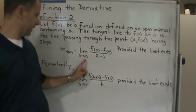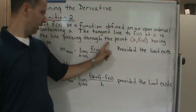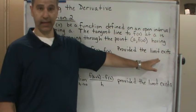Notice the slope of the tangent line is given as a limit, the limit as x approaches a of the difference quotient, provided, of course, that the limit does exist.